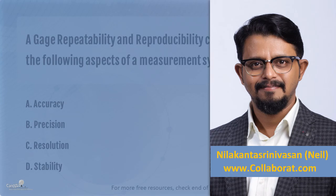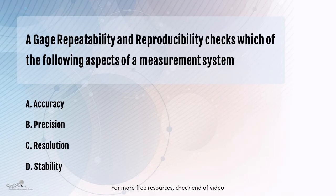This question relates to the concept of Gauge R&R or Measurement System Analysis (MSA). The question goes: a gauge repeatability and reproducibility study checks which of the following aspects of the measurement system? The options are accuracy, precision, resolution, and stability. To answer this question you need a good solid background on the theoretical concept of MSA.